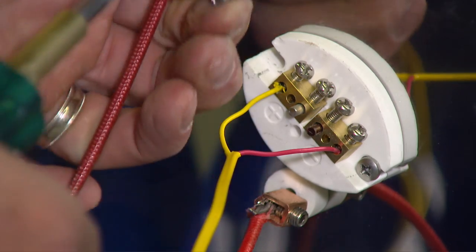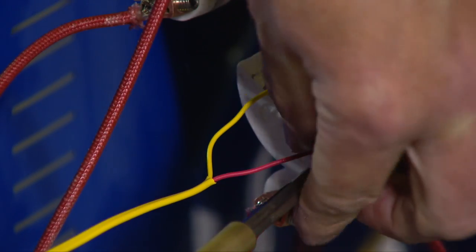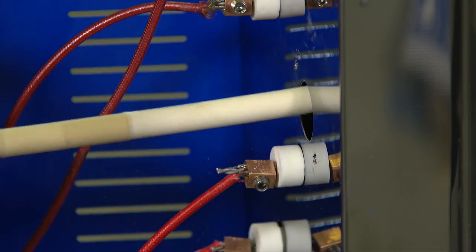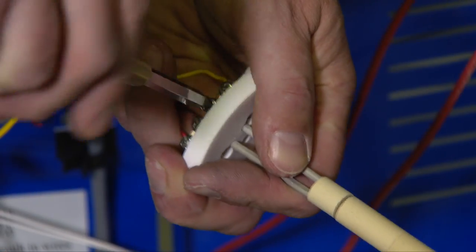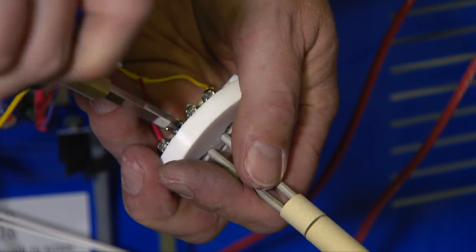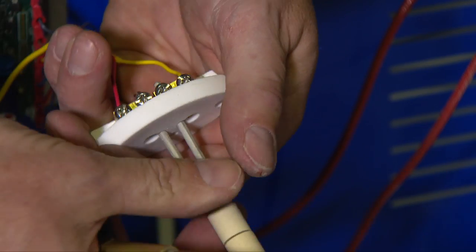Remove the two screws that secure the thermocouple mounting block to the kiln itself. This will allow you to draw the entire thermocouple out of the kiln. Using your Phillips screwdriver, remove the thermocouple from its mounting block and put it aside.